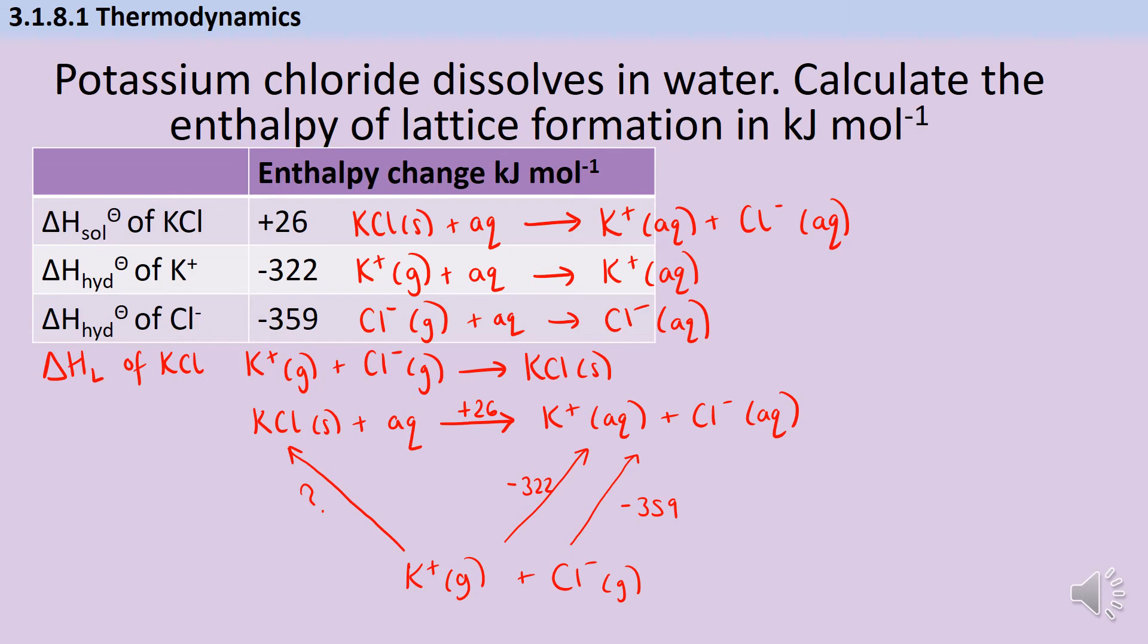What I always do, and my students laugh at me for this, is I write start and end, because what I want to do is know the value of this arrow moving from where I've written start to where I've written end. But I can't do that. I'm going to have to go the wrong way around the cycle. But that's okay because Hess's law tells me it's all going to work out with the same overall enthalpy change.